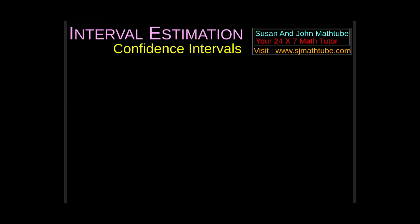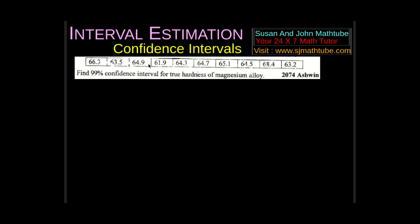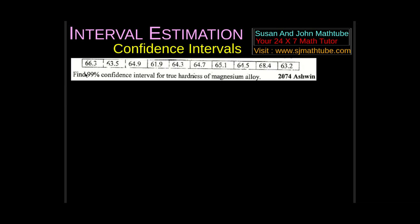Let's try one more question, and this time it will be slightly different — be ready with a calculator. I found this question in a 2074 question paper. They have measured the hardness of magnesium alloy and we have a few sample data points — 10 values in total, so n = 10. This is a small sample (less than 30).